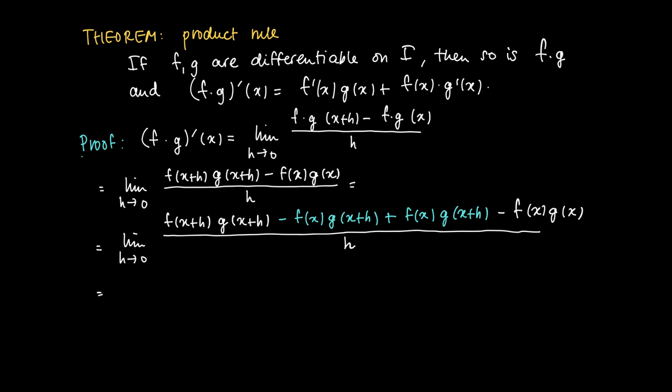So the trick is that now in the numerator we have two common terms. We can take out gx plus h times fx plus h minus fx divided by h, which we almost recognize as the derivative of f in x. And the other term has a common term fx, so we take out fx times gx plus h minus gx divided by h. And here we recognize almost the derivative of g.